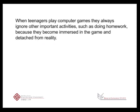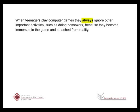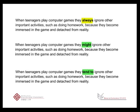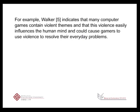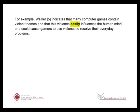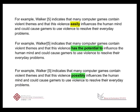Let's look at the next sentence. Here, Gigi is being too certain. She's written 'always'. It is difficult to prove that students always ignore other important activities. If you cannot prove this, you need to hedge this claim, and a commonly used structure for doing this is 'might' or 'tend to'. Gigi is too certain again at the end of the essay — she's used the word 'easily'. In this case, it's better to use expressions like 'has the potential to', or words like 'possibly'.